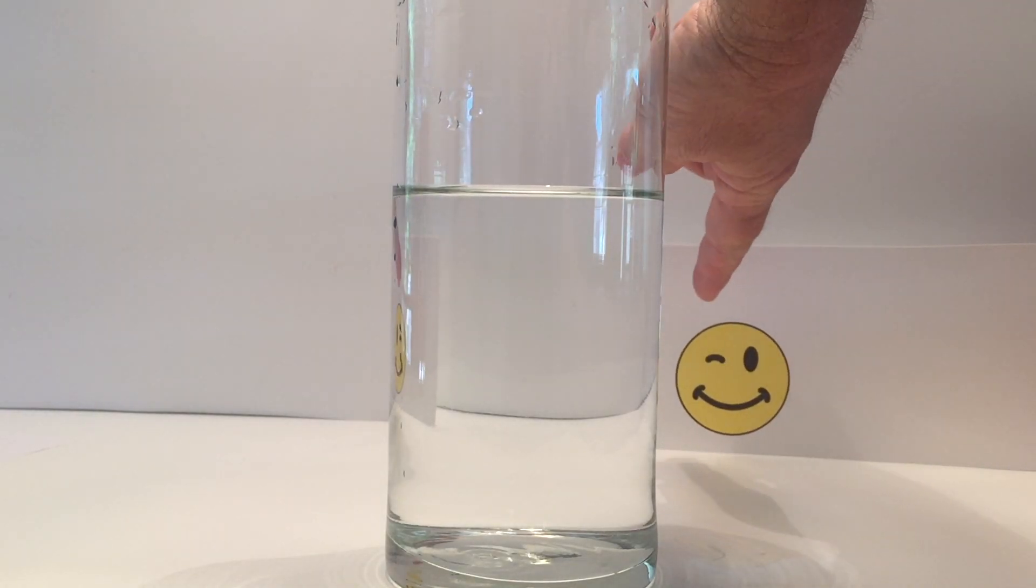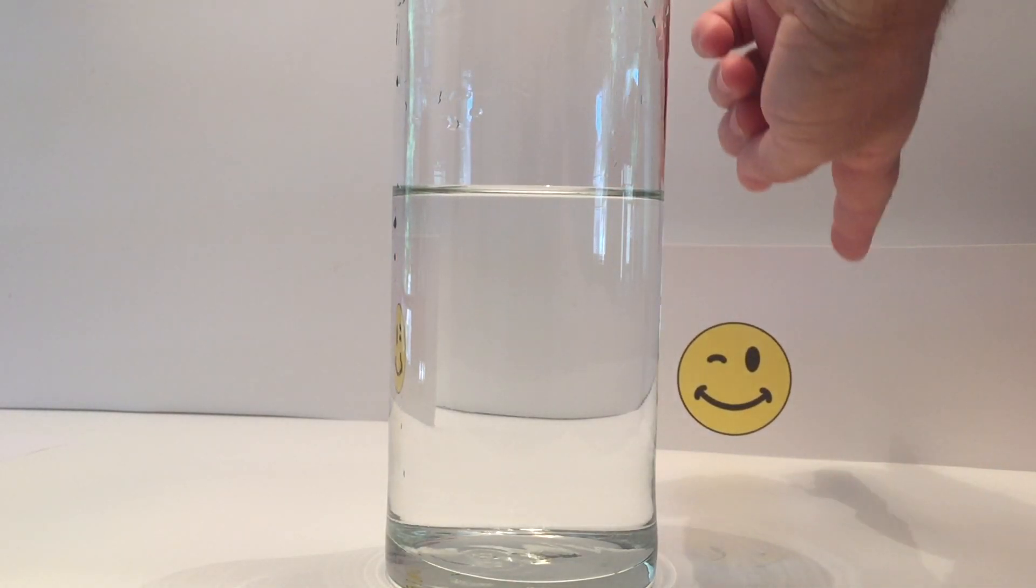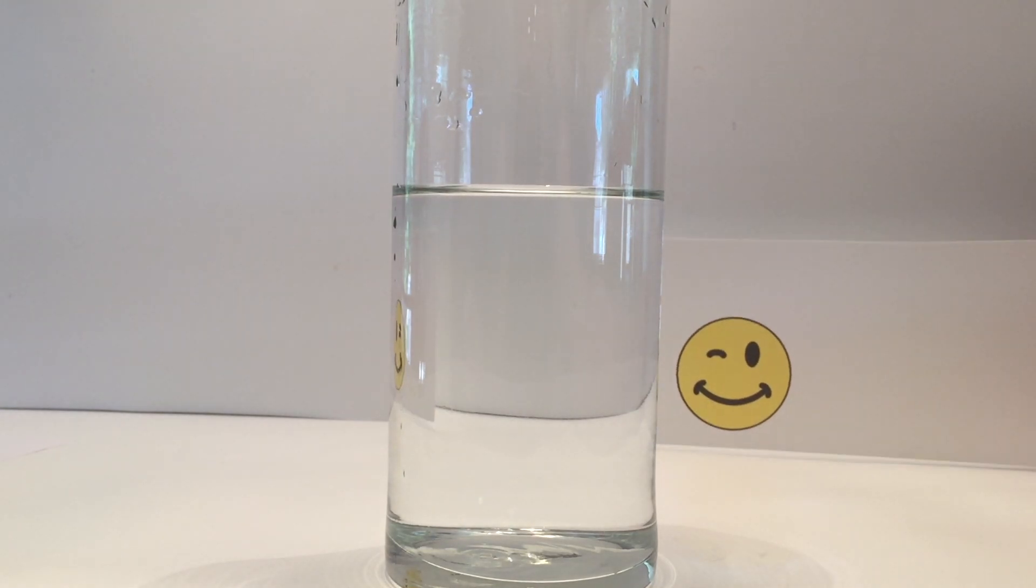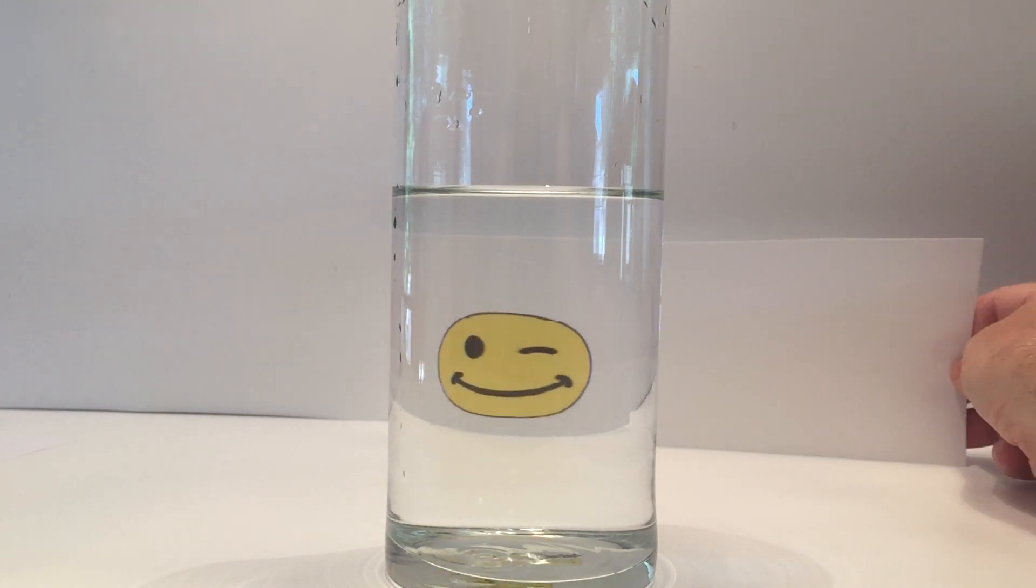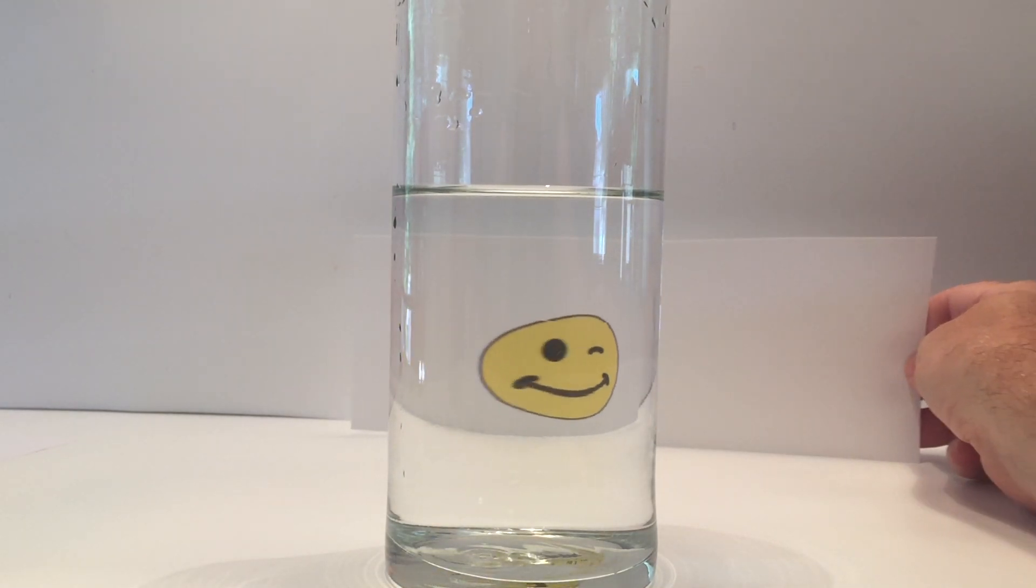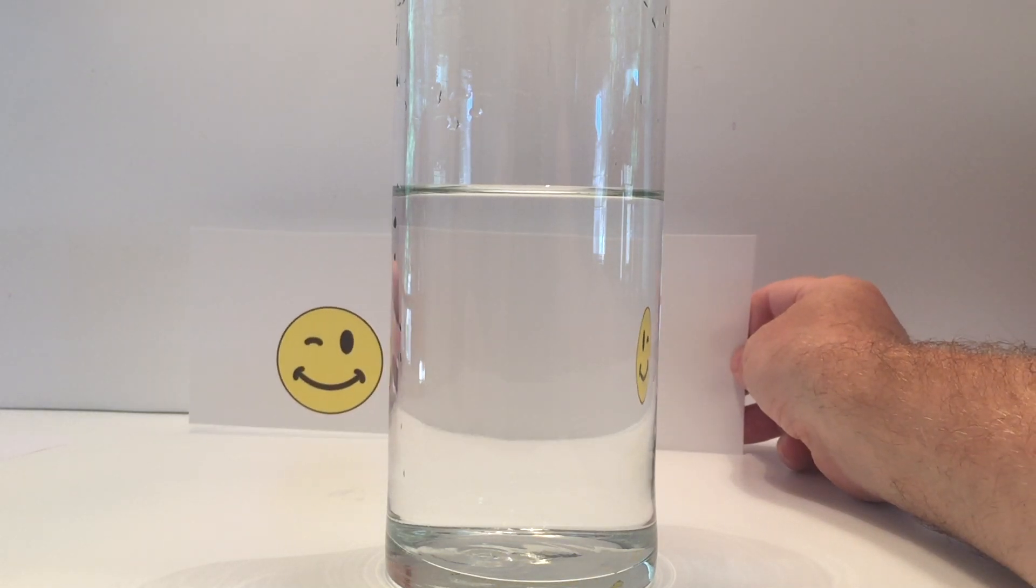Same thing with the smiley face with a wink on one side on the left-hand side. When we pass it through the back of the glass, about four or five inches behind, the wink goes to the right side, and then all the way through, it's back on the left side.